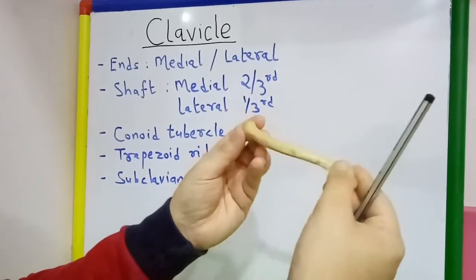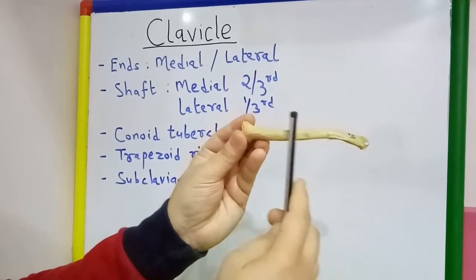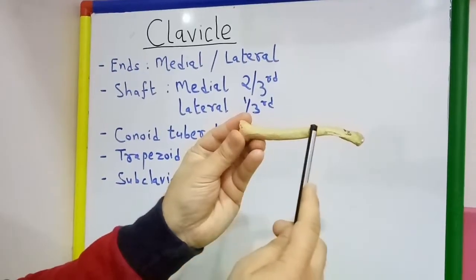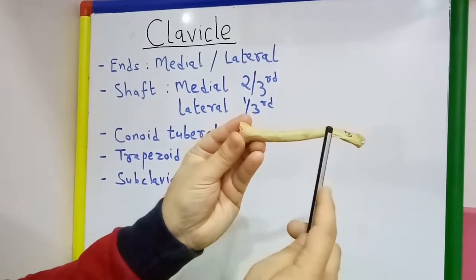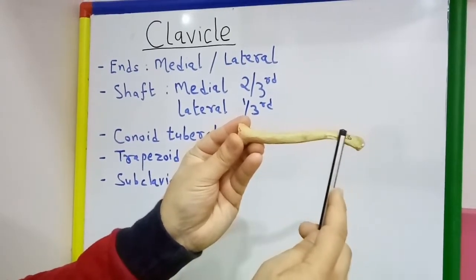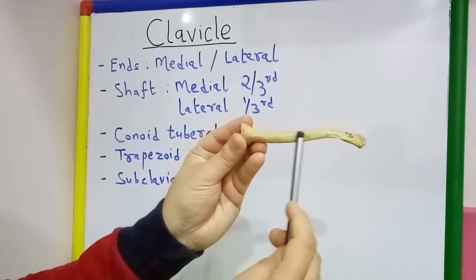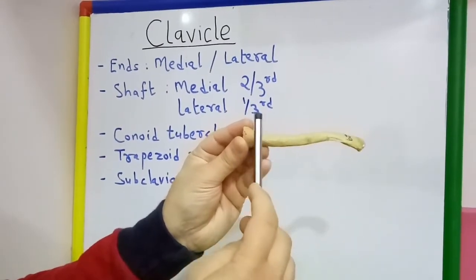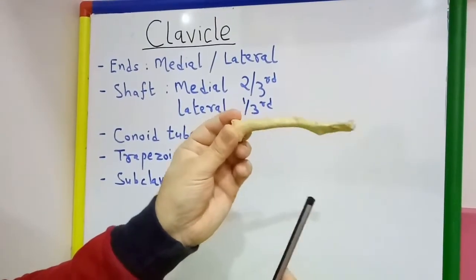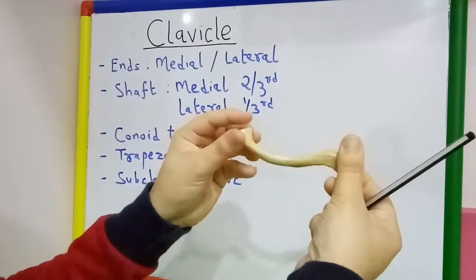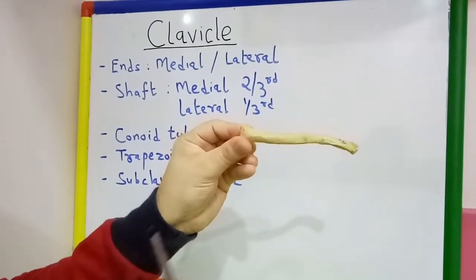Coming to the shaft, the shaft is divided into medial two-third and lateral one-third. In the medial two-third of the shaft, it is rounded as we can see here, so that there are four surfaces.